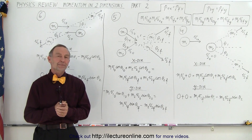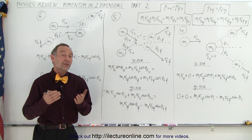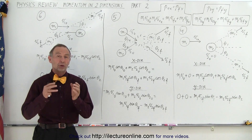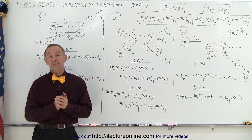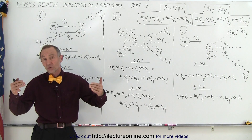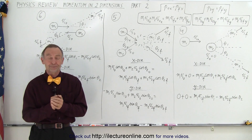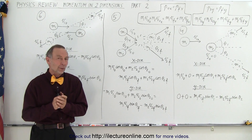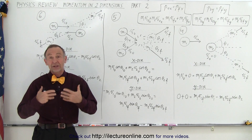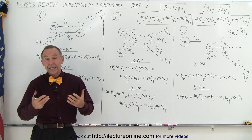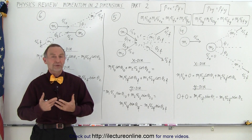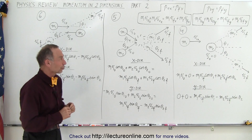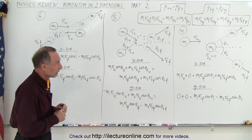Welcome to Electron Line. In the previous video, we looked at one-dimensional momentum — momentum in just one dimension. But here we're going to take a look at what happens when we have collisions and the objects move in two dimensions. So we have three examples on the board to go through.